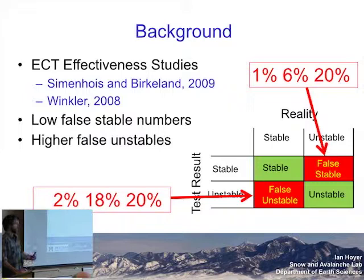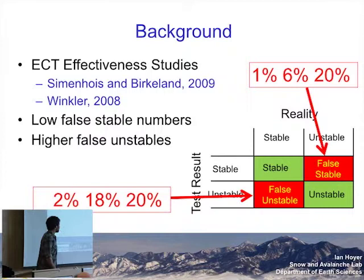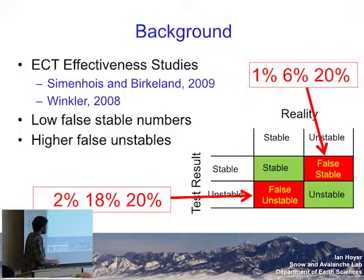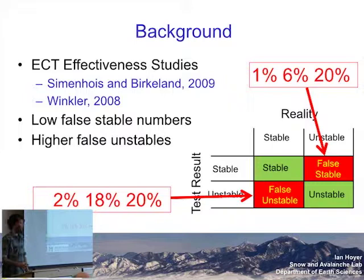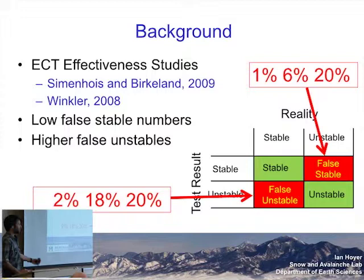There have also been studies looking at the effectiveness of the ECT — how well the false stable and false unstable rates work. If the slope is actually stable, you want your test to tell you it's stable; if it's unstable, you want an unstable result. From early work by Carl, Ron, and Winkler, false stable rates were somewhere between 1% and 20%, and false unstables somewhere under 20%, which seem to be better than some other stability tests.